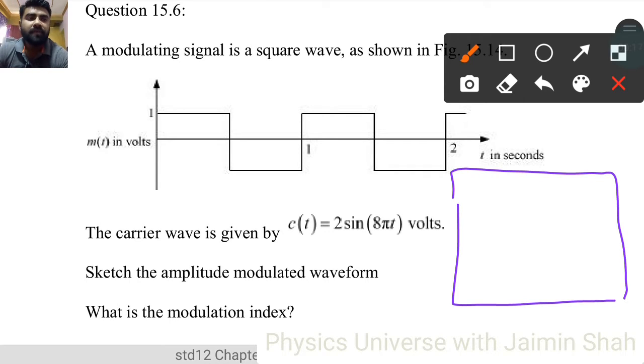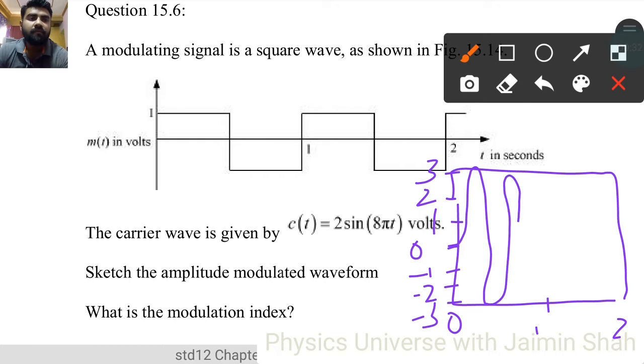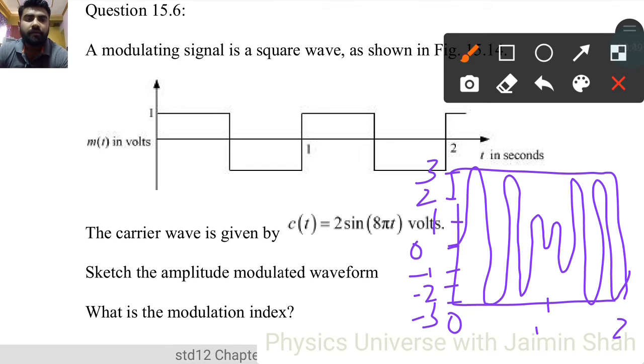That starts from 0, 1, 2, and 3 here, minus 1, minus 2, and minus 3, and here 0, 1, and 2. So that starts from here like this - that is the waveform.